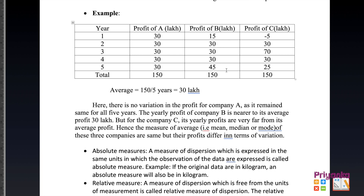Totaling company B's profits gives 150; dividing by 5 years also gives an average of 30 lakh. For company C, in the first year there is a loss of minus 5, then 30, then 70, then 30, then 25. There is a lot of variation — the first year was a loss, then 70, with large differences — but totaling still gives 150 and an average of 30 lakh.